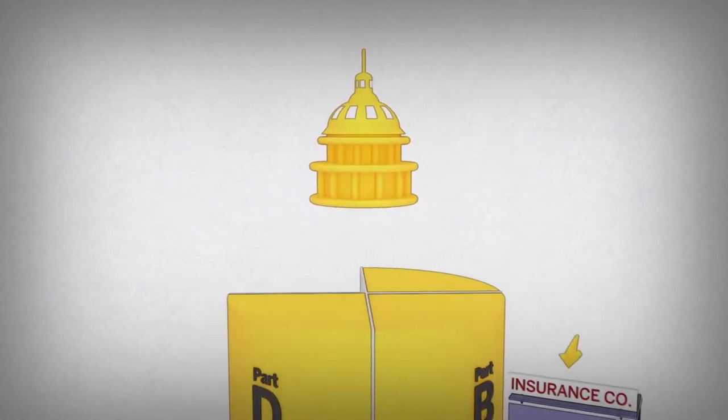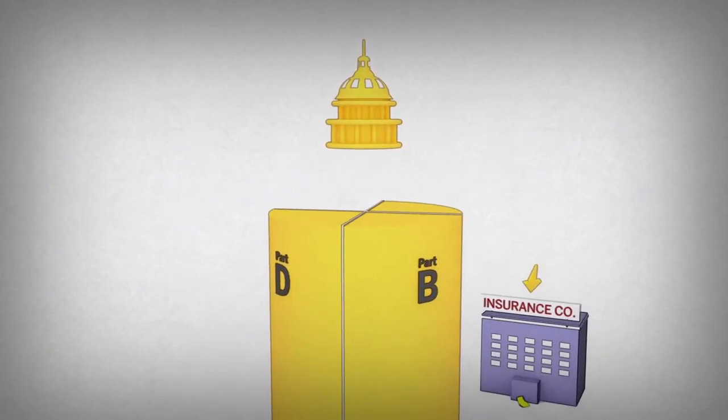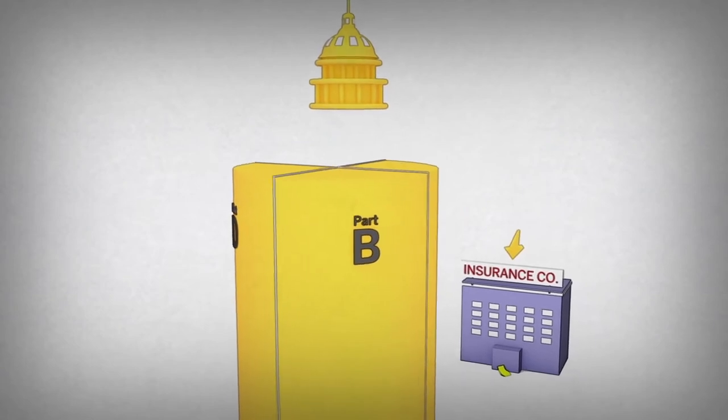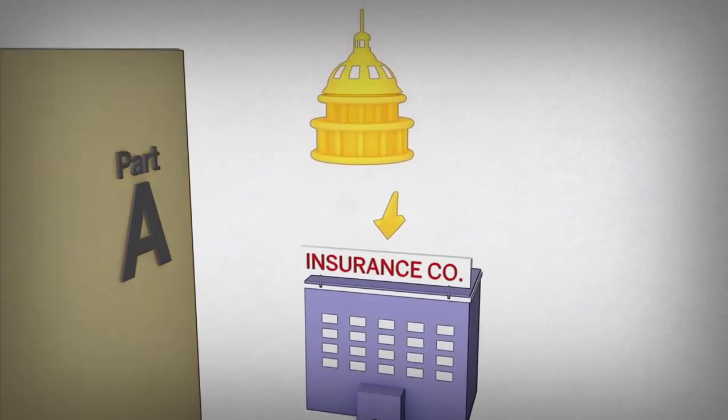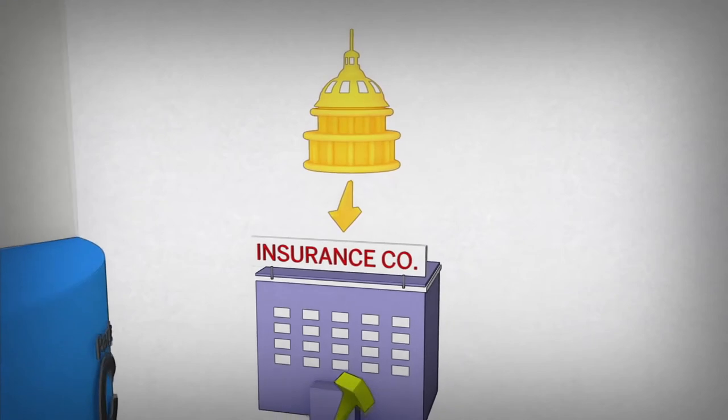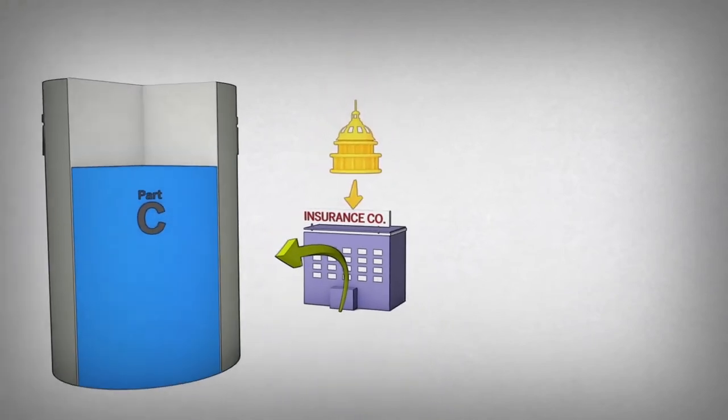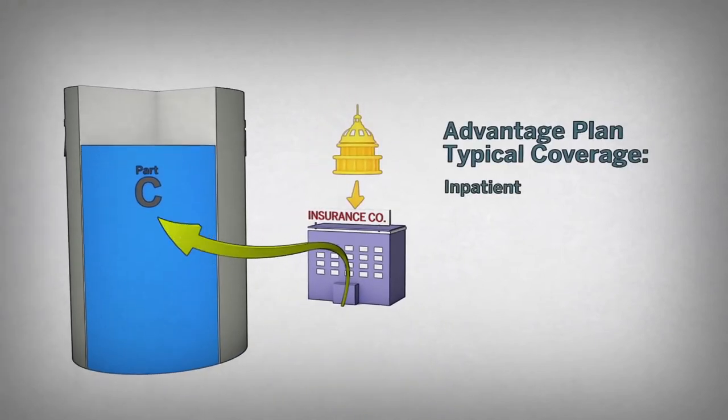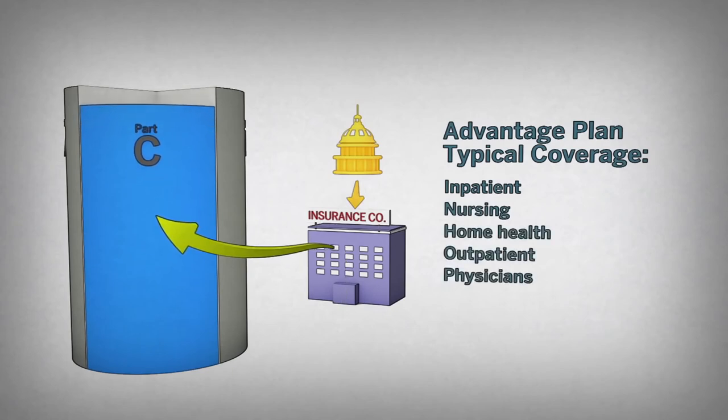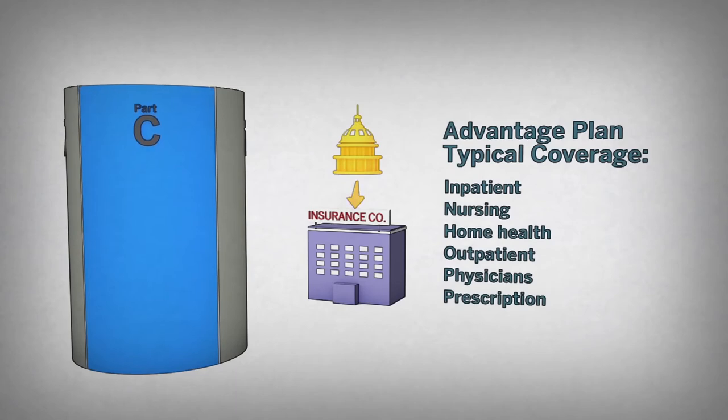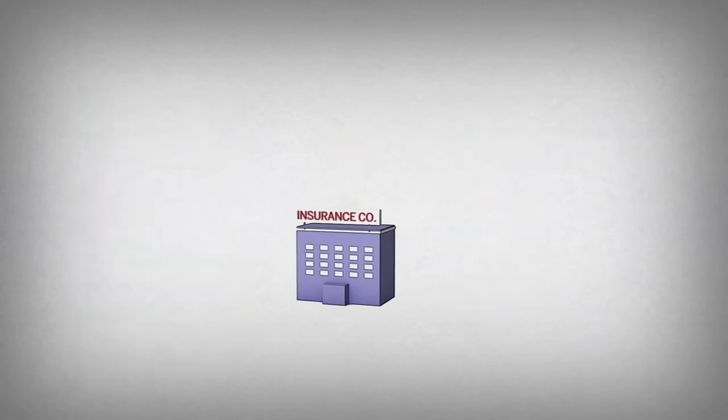While traditional Medicare is administered directly by the federal government, under Medicare Advantage, the government contracts with private payers. At minimum, these payers are required to provide the same level of coverage outlined in Medicare Parts A and B, and typically they provide Medicare Part D prescription drug coverage as well.